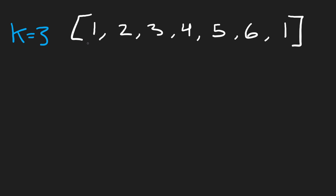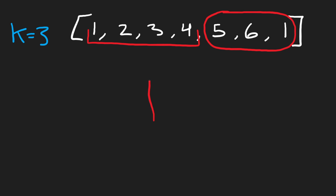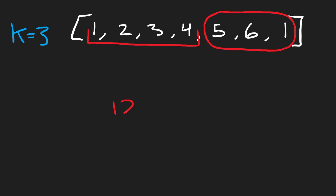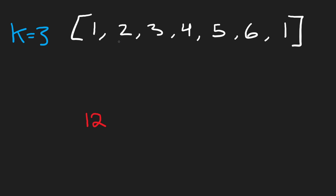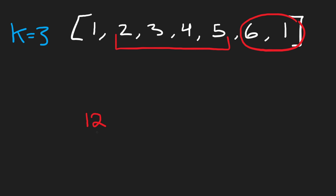With the sliding window, we arrange the window so that everything outside it represents our chosen cards. Initially the window is all the way to the left, leaving exactly k elements on the right side. We take the sum of those three elements and get 12 — that's our best result so far. Now we'll shift the window one position at a time toward the right end.